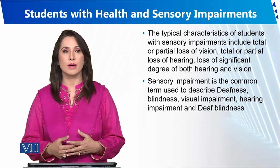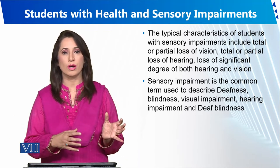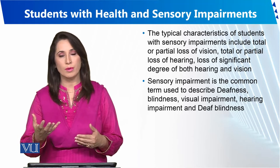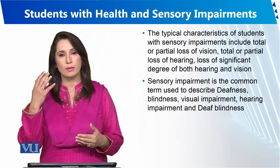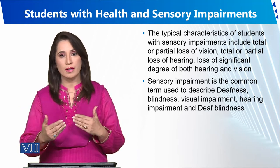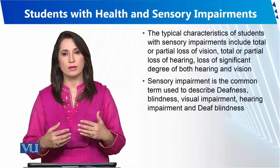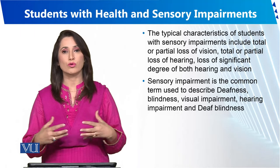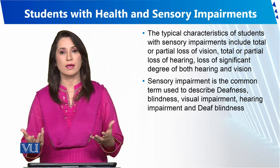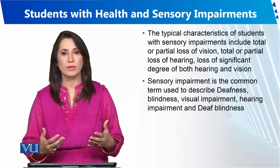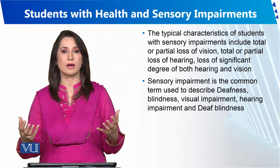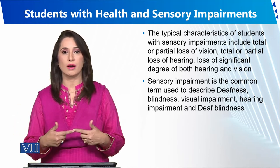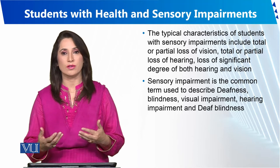When there is a problem, we need to design the instruction. As we talk about sensory impairment, when we talk about blindness, partial blindness is mild or moderate — we are able to manage the classes without major issues. But when there is complete blindness, then we create a special instruction plan.